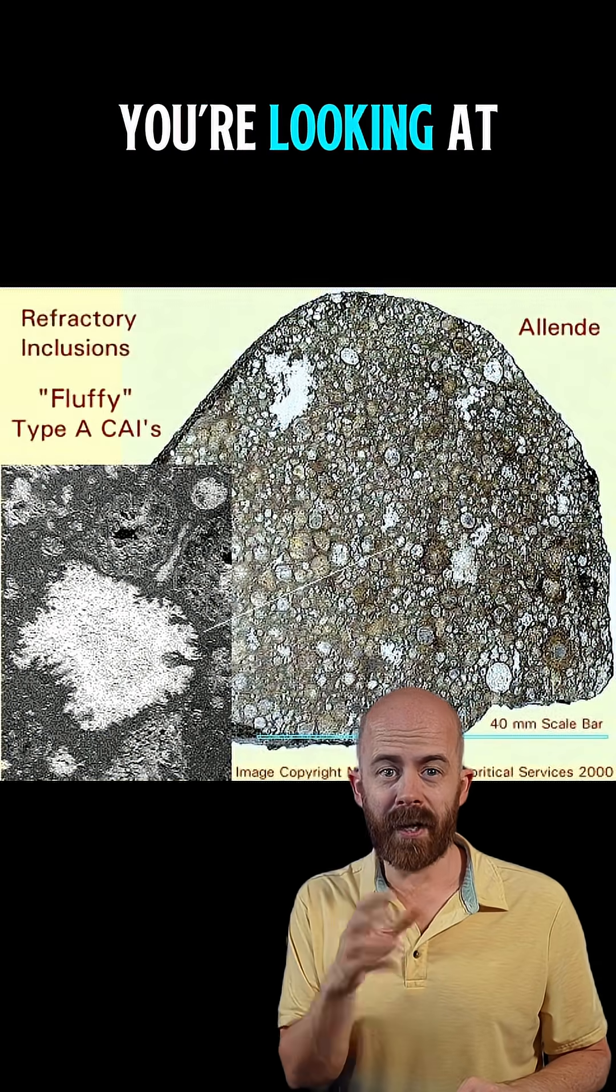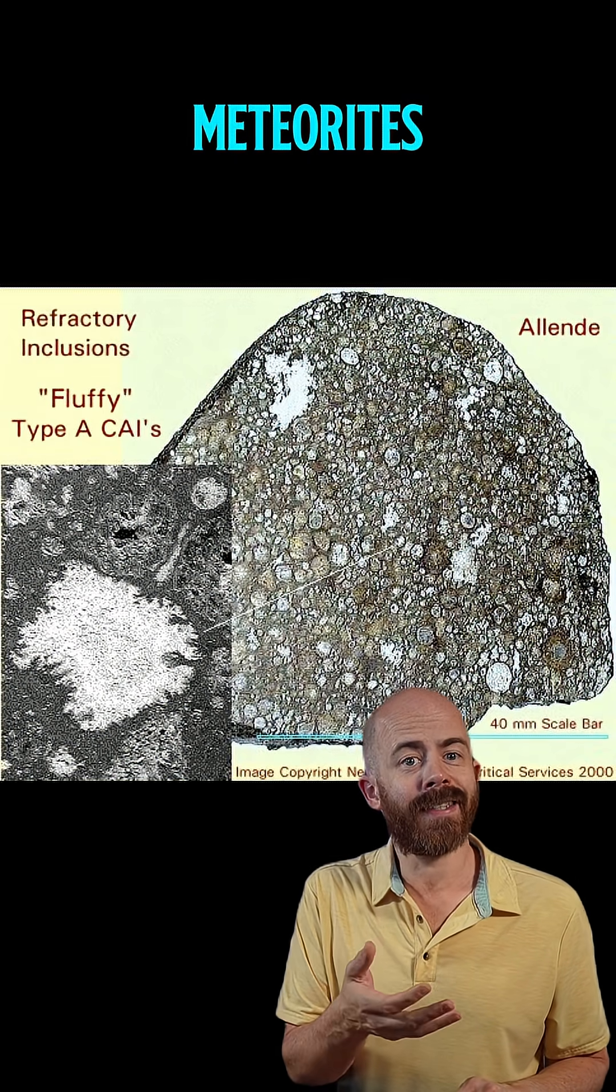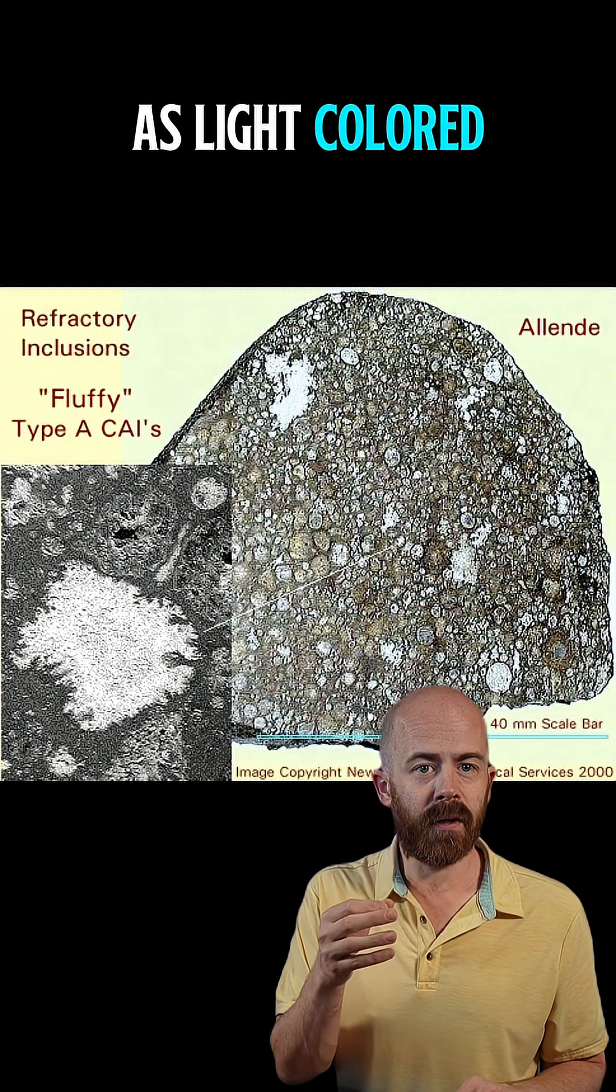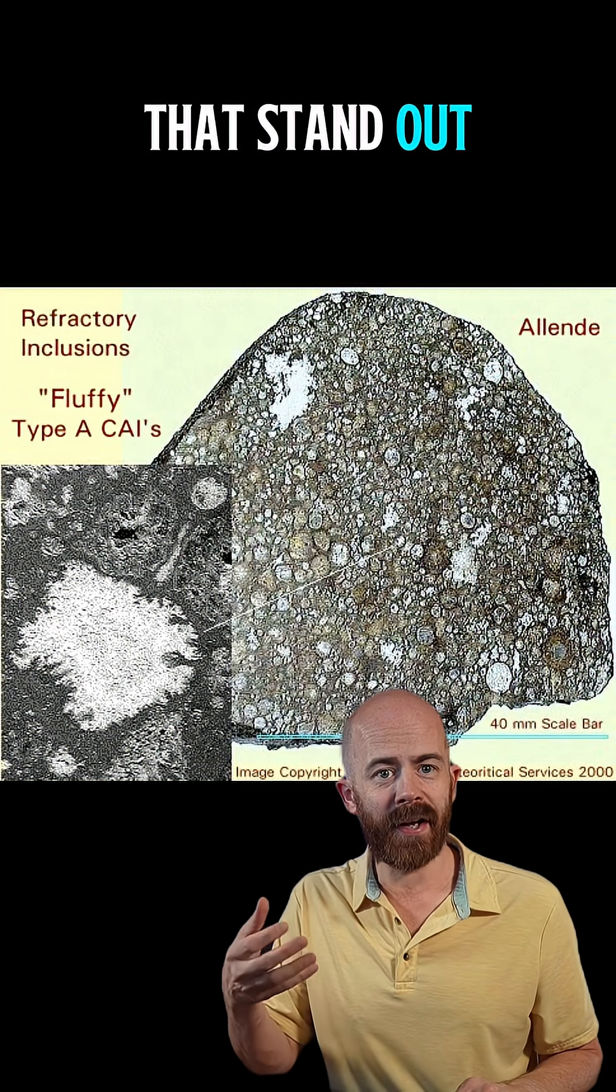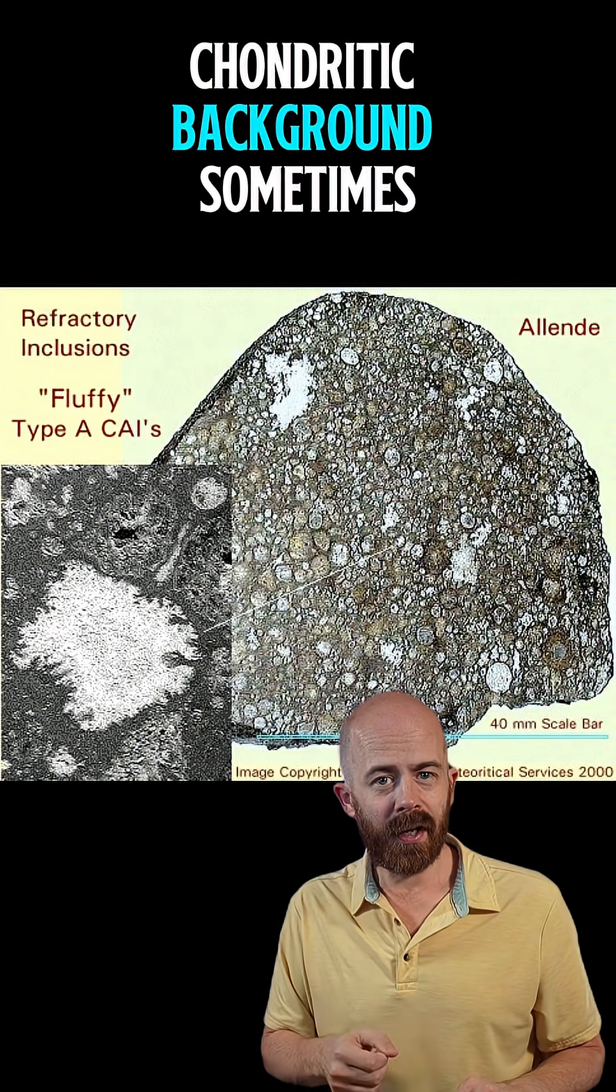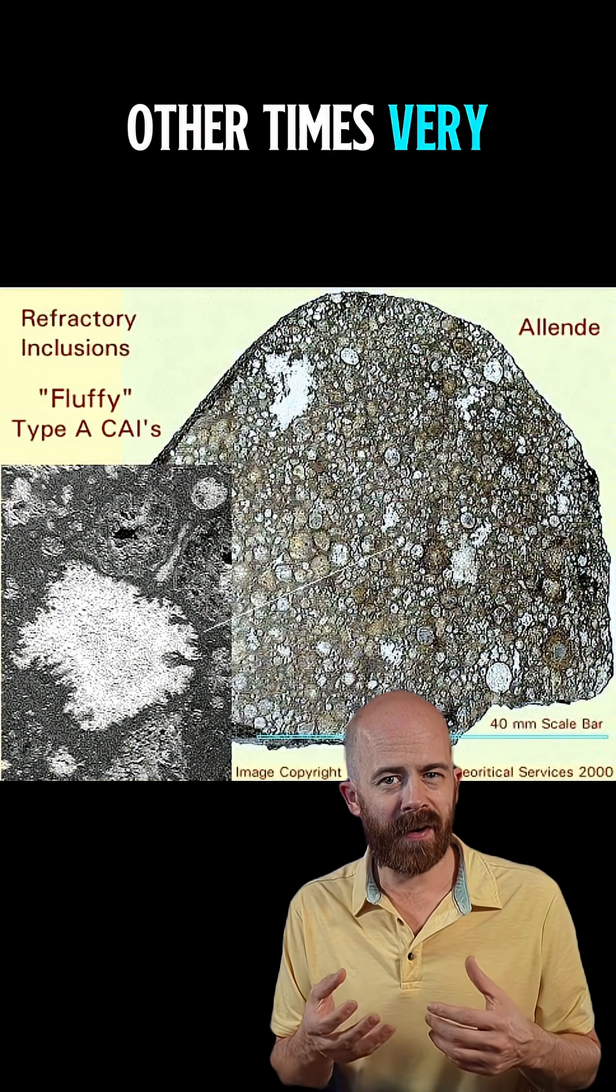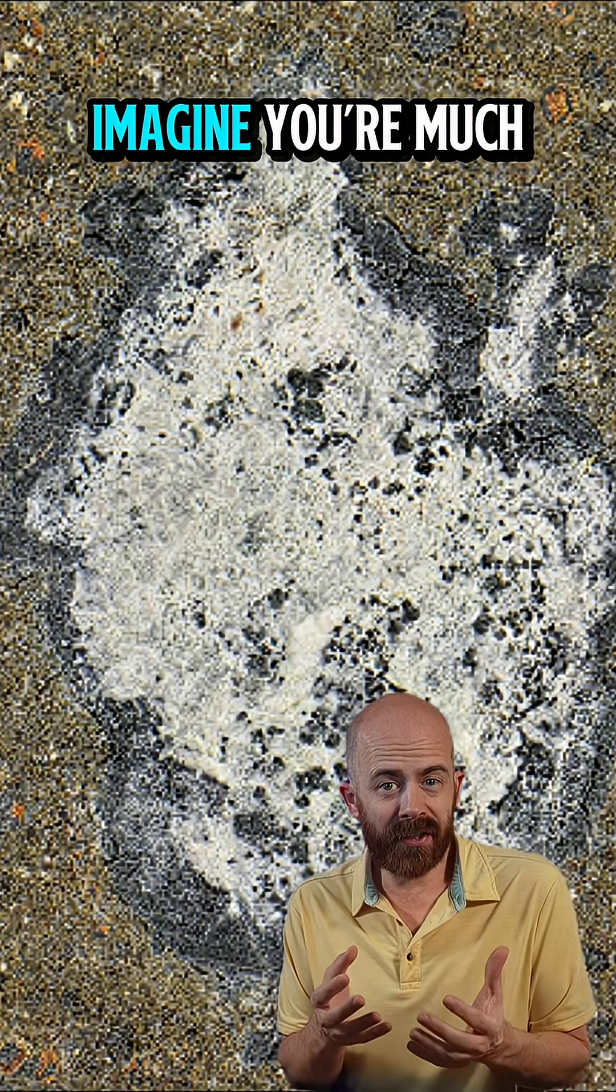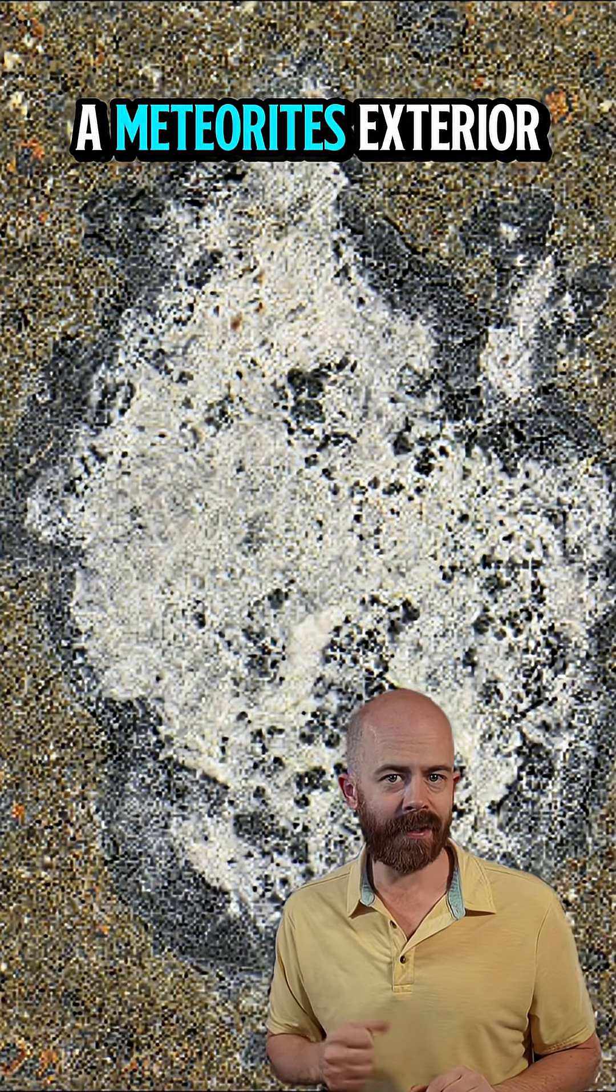So how do you spot CAIs if you're looking at a meteorite? Well, in most meteorites, CAIs show up as light-colored patches or nodules that stand out against a darker chondritic background. Sometimes they're round, other times very irregular, almost like chalky islands inside the rock. As you might imagine, you're much more likely to find these inside cut meteorites than visible on a meteorite's exterior.